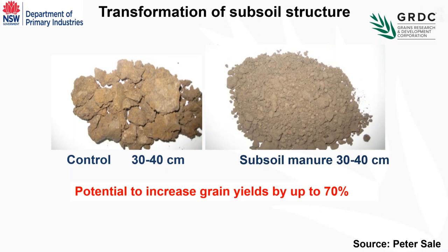Associate Professor Peter Sale has demonstrated in the past, in the high rainfall area of Victoria, that by adding organic amendments into the subsoil we have the potential to transform that poorly structured hostile subsoil. This is an example of a subsoil from about 30 to 40 centimetres, and after four years of subsoil manuring he was able to demonstrate how that structure can be transformed into a much better structure. Those transformations were associated with yield benefits of up to 70 percent — a remarkable opportunity we are trying to adopt with a broader range of products and more viable managements.